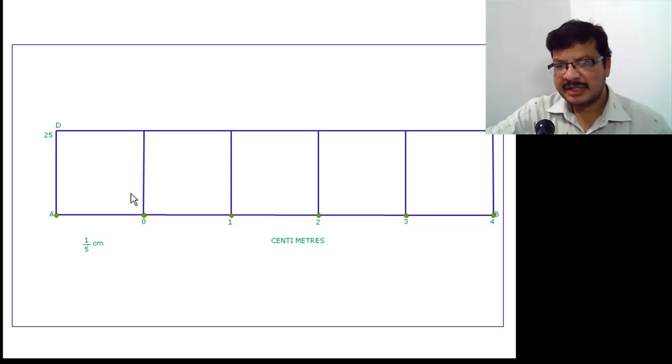To get 1/5 cm, divide this length into 5 equal parts. Then, this is 1/5, 2/5, 3/5, 4/5, and 5/5.